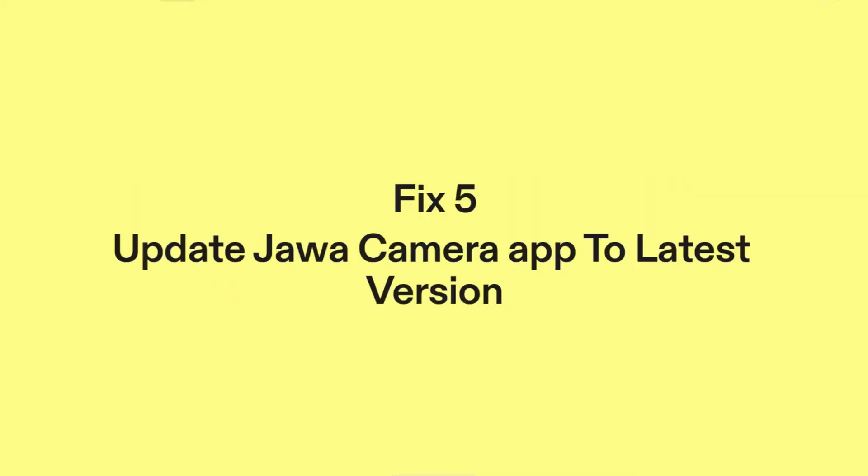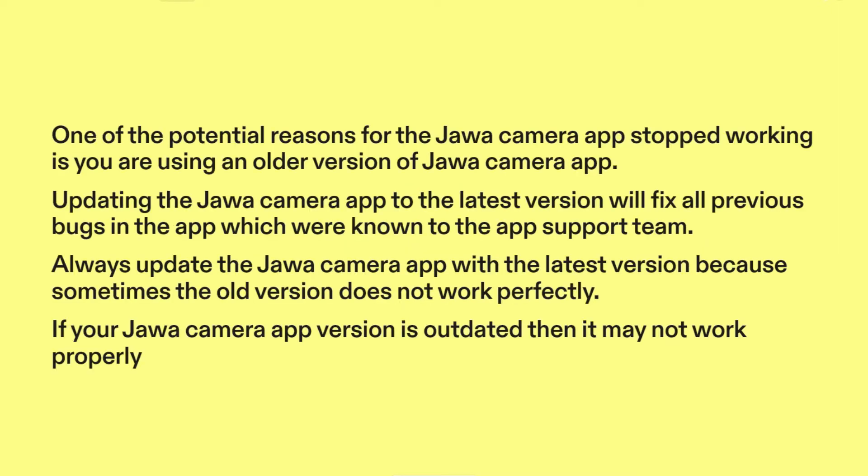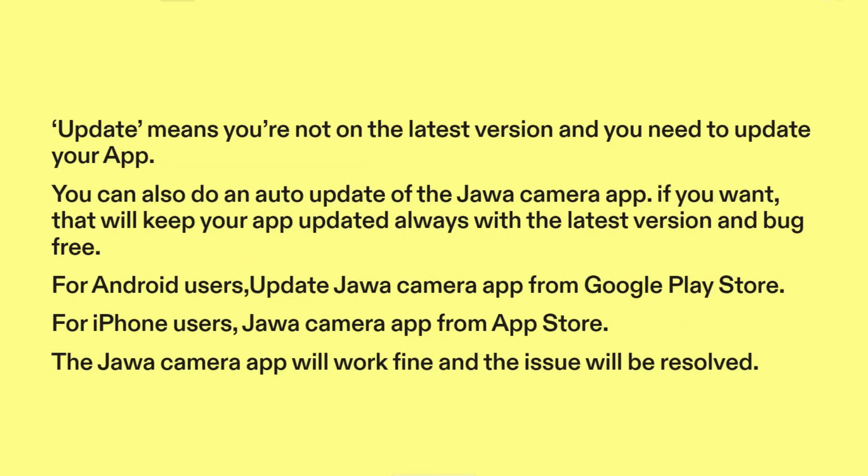Fix five: update Jawa camera app to the latest version. One of the potential reasons for the Jawa camera app stopped working is you are using an older version. Updating to the latest version will fix all previous known bugs. Always update the app because sometimes the old version does not work perfectly. You can also enable auto-update to keep your app updated always with the latest version and bug-free.